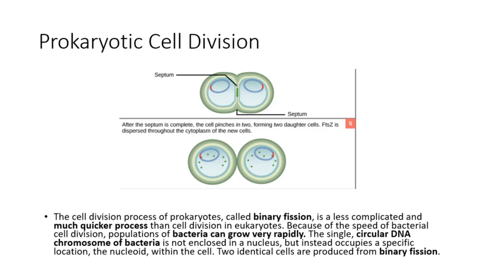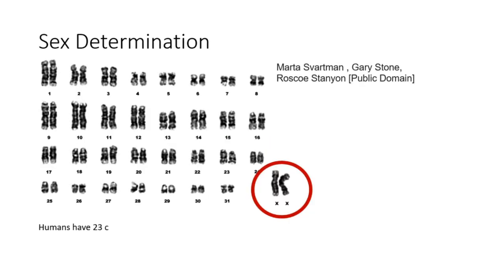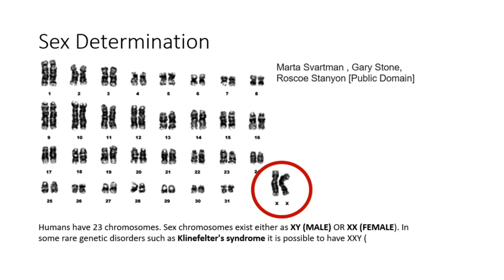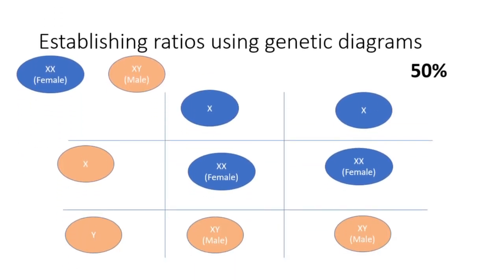Two identical cells are produced from binary fission. Humans have 23 chromosomes. Sex chromosomes exist either as XY (male) or XX (female). In some rare genetic disorders such as Klinefelter syndrome, it is possible to have XXY — a male born with an extra chromosome. Only one sex chromosome is present in gametes. Therefore, during fertilization there is a 50% chance that male or female will be the sex of the offspring in each scenario.